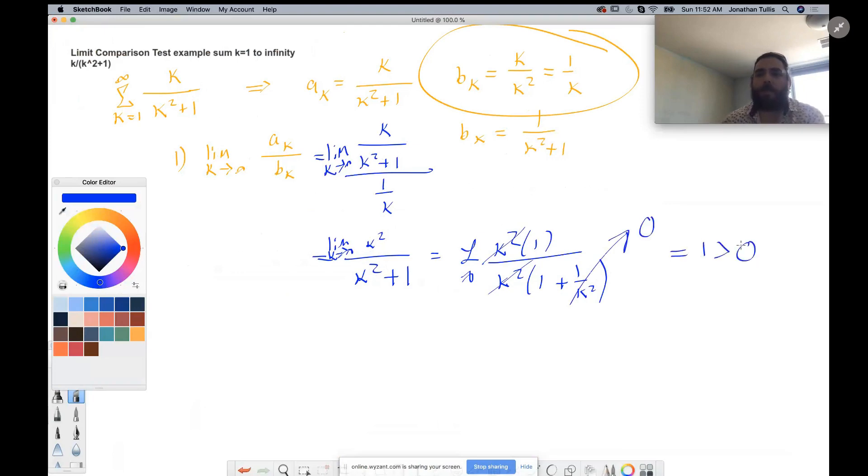And that is greater than zero. So what we're concerned about is if this is equal to c greater than zero, a constant greater than zero is the first step. Then second, we check bk.